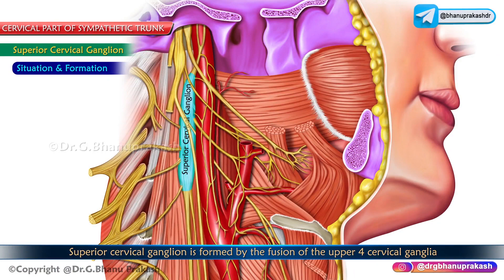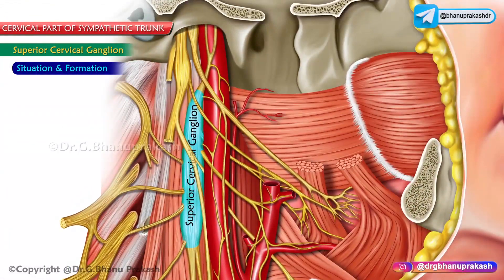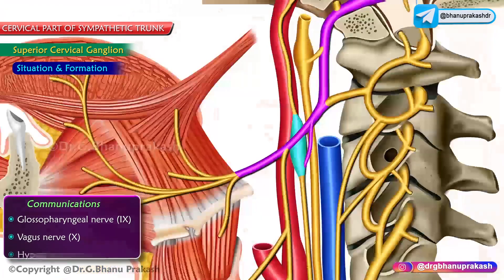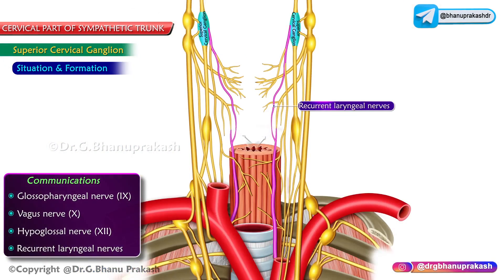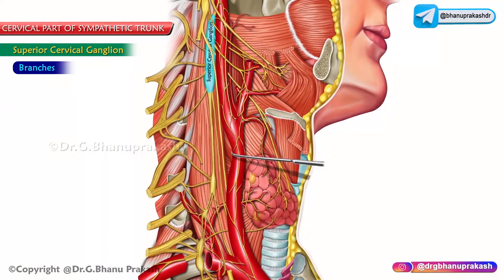The superior cervical ganglion is formed by the fusion of the upper four cervical ganglia, which is the reason it is the largest of the three cervical ganglia. It receives communications with cranial nerves 9, 10, and 12, and with the recurrent laryngeal nerves.